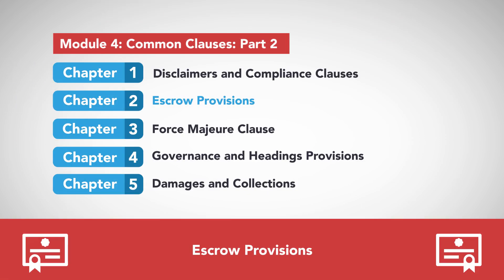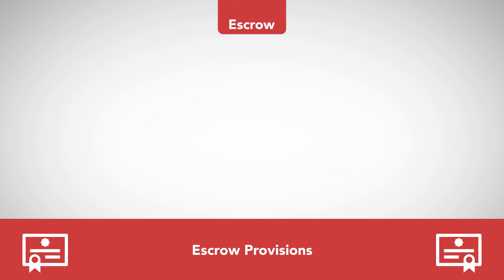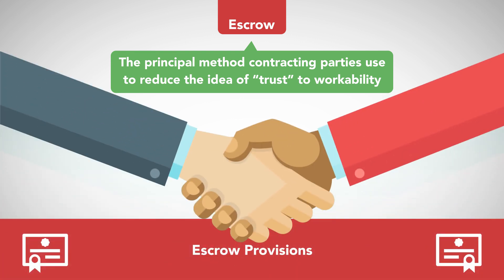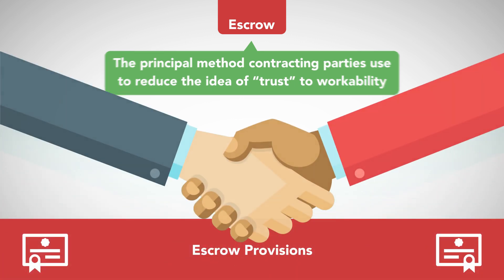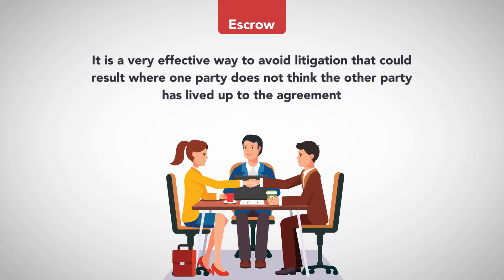Escrow. Escrow is the principal method contracting parties use to reduce the idea of trust to workability. It is a very effective way to avoid litigation that could result where one party does not think the other party has lived up to the agreement.